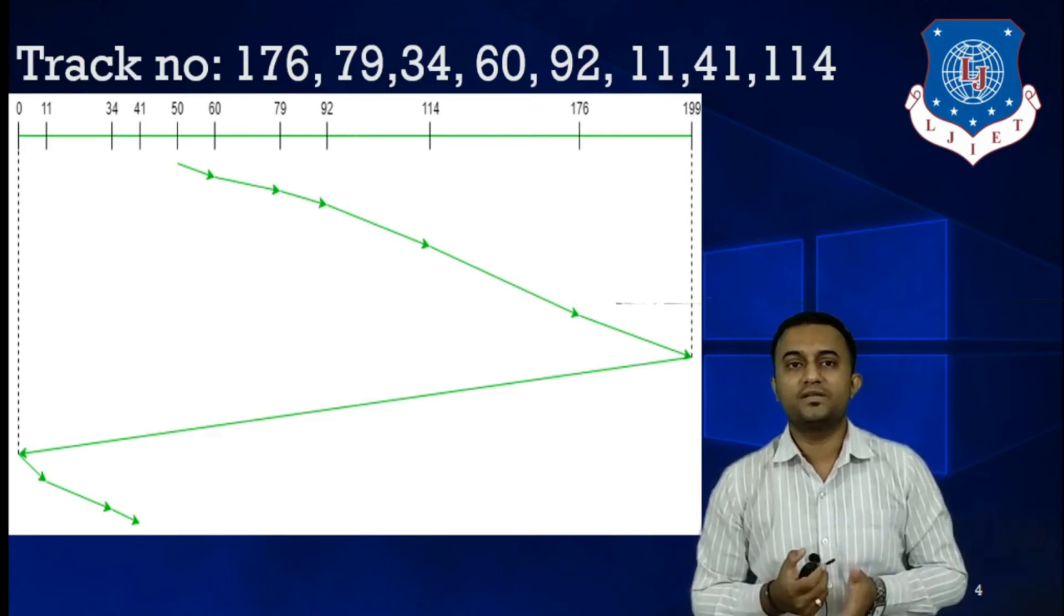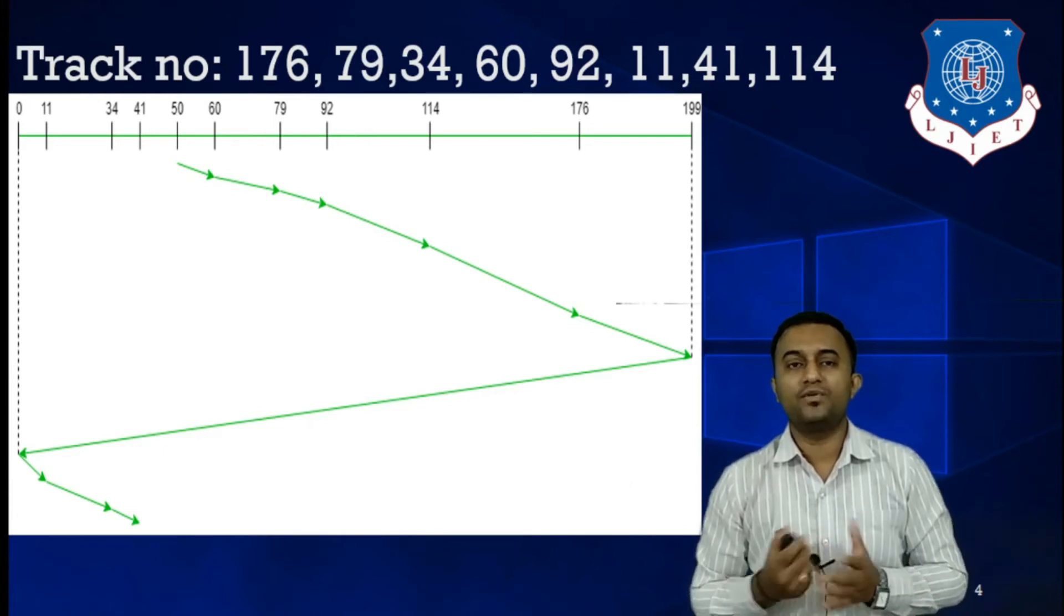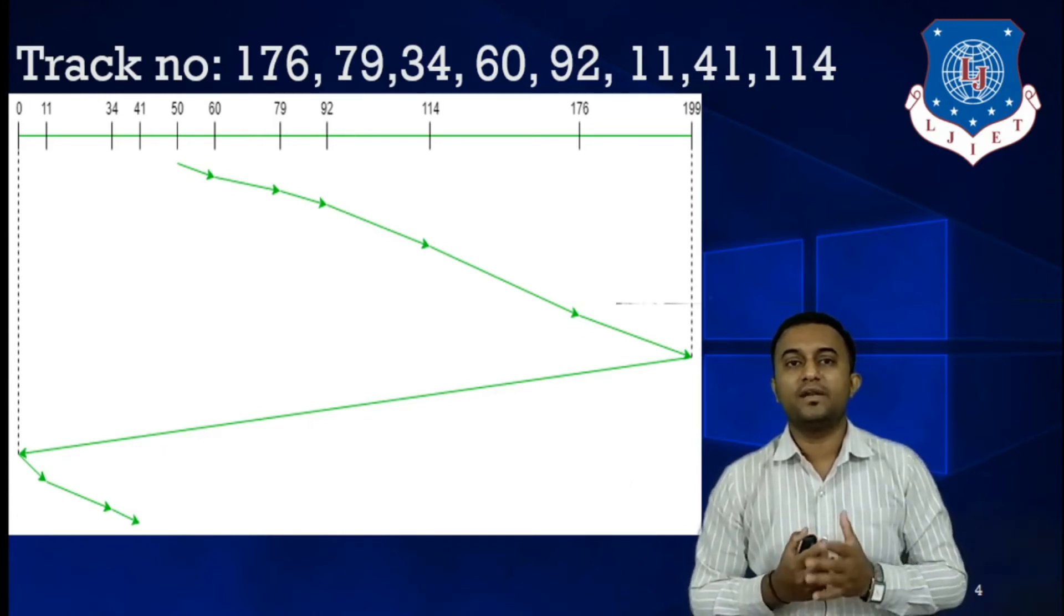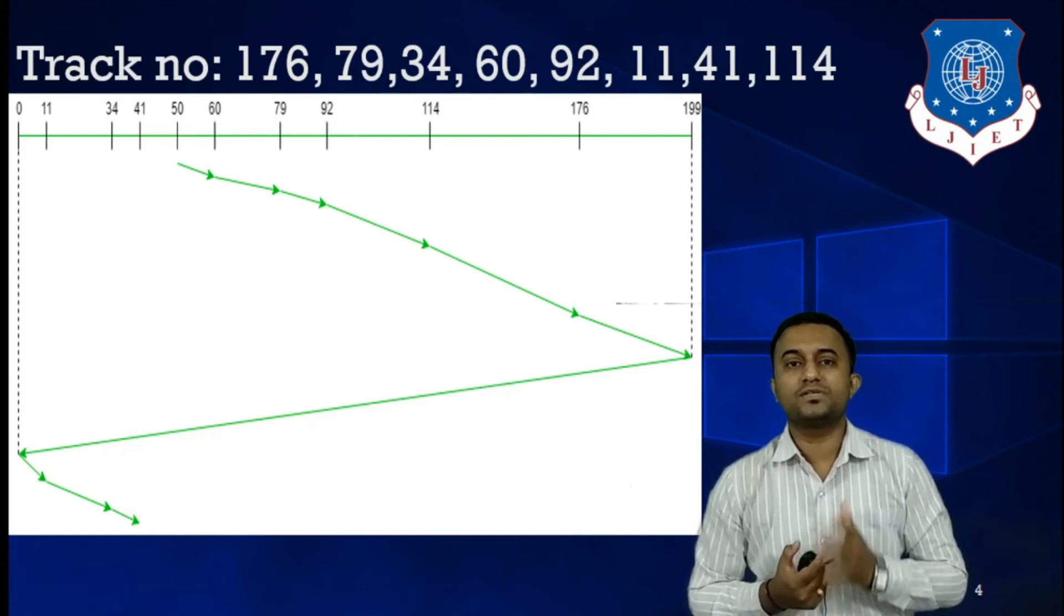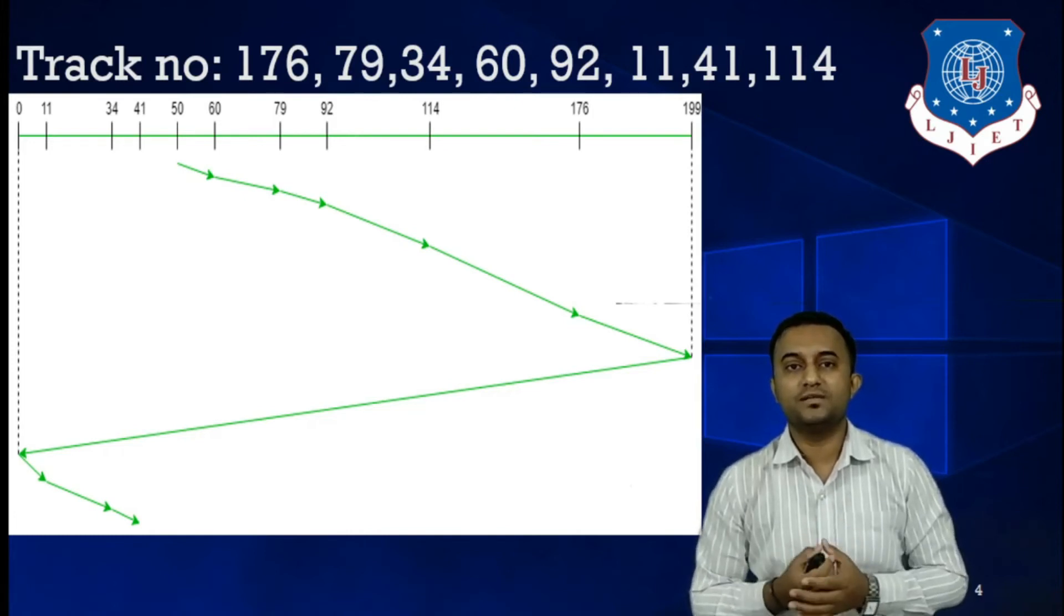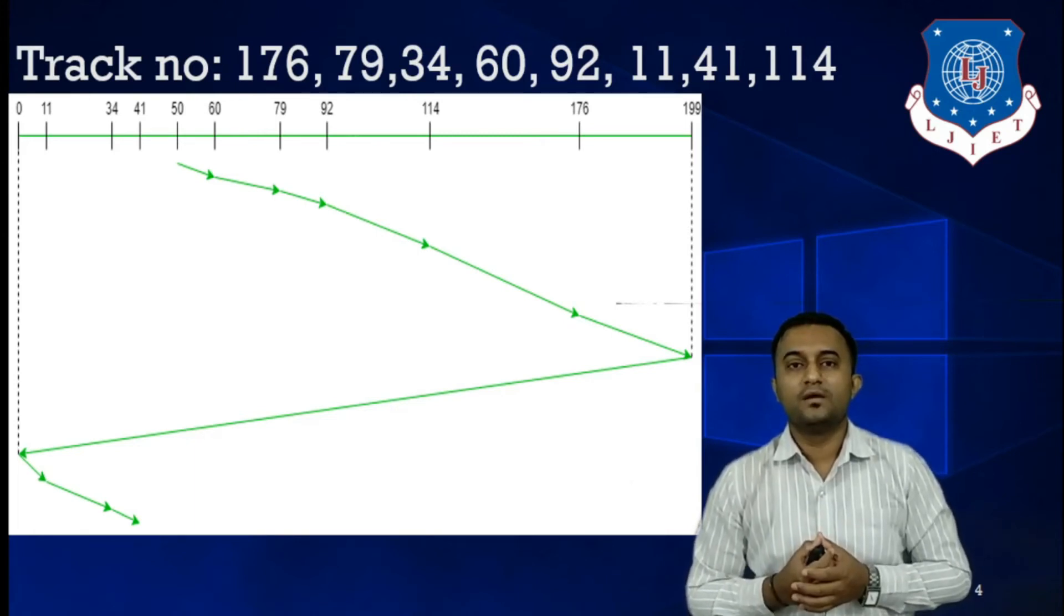Once 60 is satisfied, the next request will be 79. 79 is satisfied. Once 79 is satisfied, the next request will be 92. 92 would be satisfied and the next request is 114. 114 is satisfied. Then another request is 176 in the same direction. 176 is satisfied. Fine.